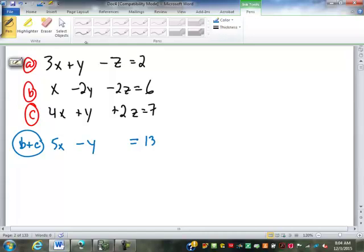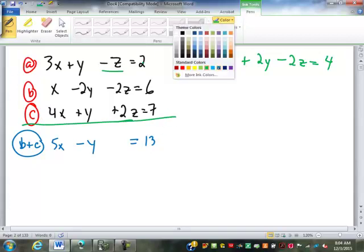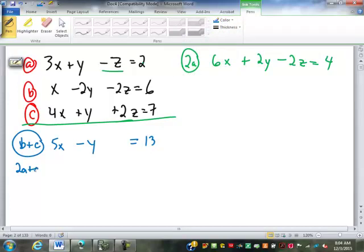Now, I need to use equation A. But, there's nothing that will cancel out. I mean, I still have to cancel out Z. But, I have a negative 1 and a positive 2. So, if I do 2 times A. Which will be 6X plus 2Y minus 2Z equals 4. I've got to remember to multiply that number as well. And, I add that to equation C. So, Z will disappear. So, 6 and 4 makes 10X. 2 and 1 makes 3Y. Negative 2Z and positive 2Z cancels out. Equals 4 and 7 make 11.